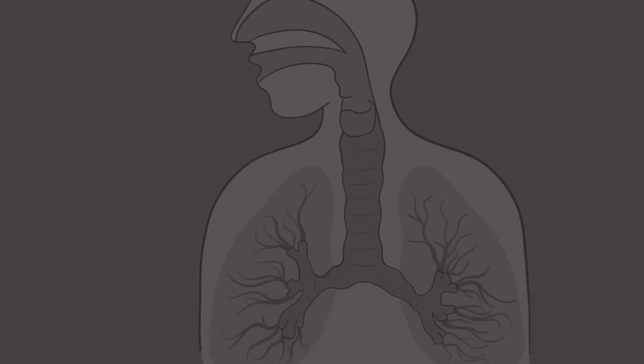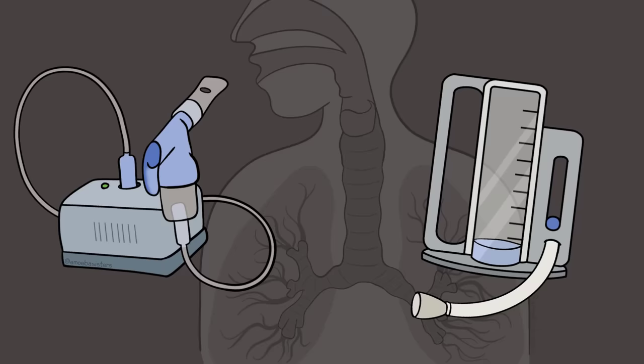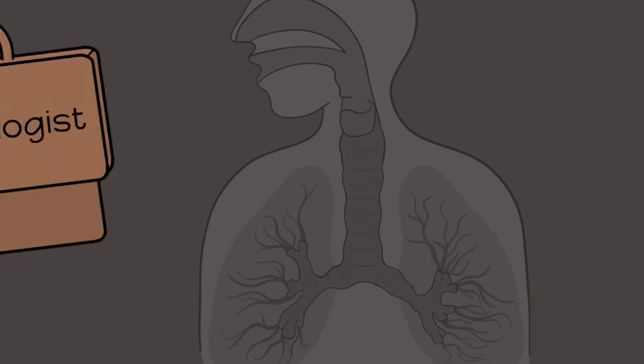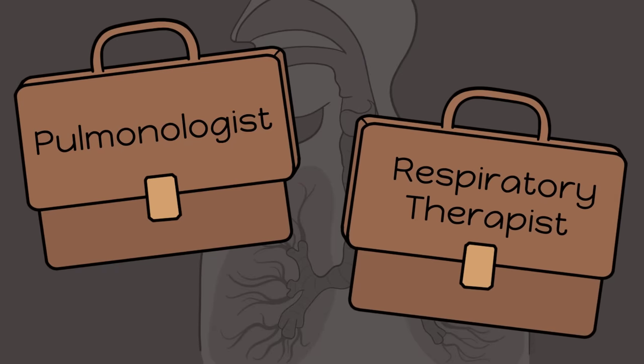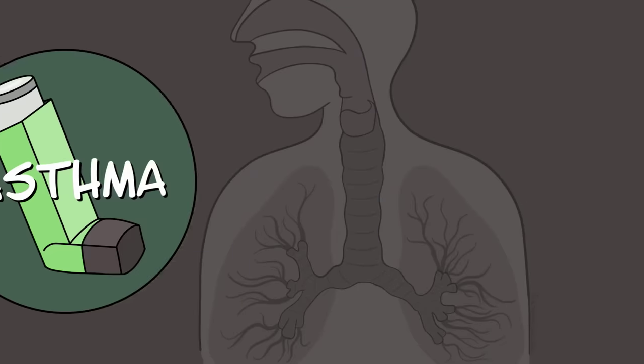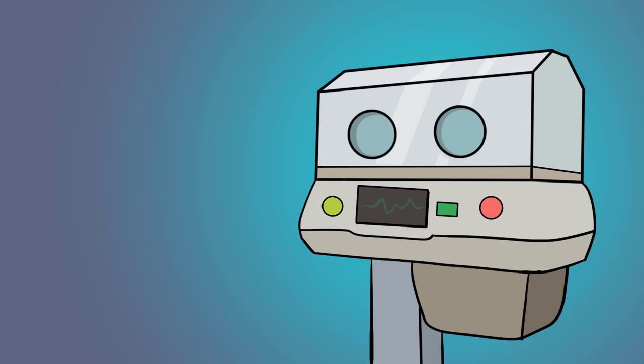Understanding how the respiratory system works can help us understand treatments for respiratory illnesses or problems. There are many careers that focus specifically on the respiratory system — two examples include pulmonologist and respiratory therapist. They may be involved in the treatment of respiratory conditions like asthma or emphysema, and they might be involved in the treatment of premature babies that might not have fully developed lungs.